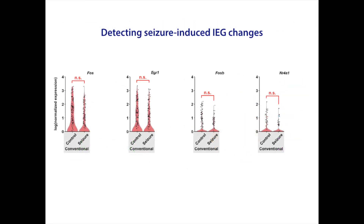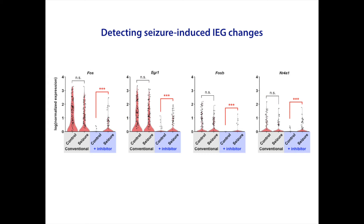We then tested whether our method could detect IEG gene expression induced by a physiological stimulus in vivo, such as seizure. The conventional method elicited strong activation of Fos and other IEGs in control animals, precluding the detection of cell activation induced by seizure. In contrast, when we suppressed the artificial expression using the inhibitor, IEG expression in control animals was drastically lower, making it possible to detect the IEG expression specifically induced by seizure.